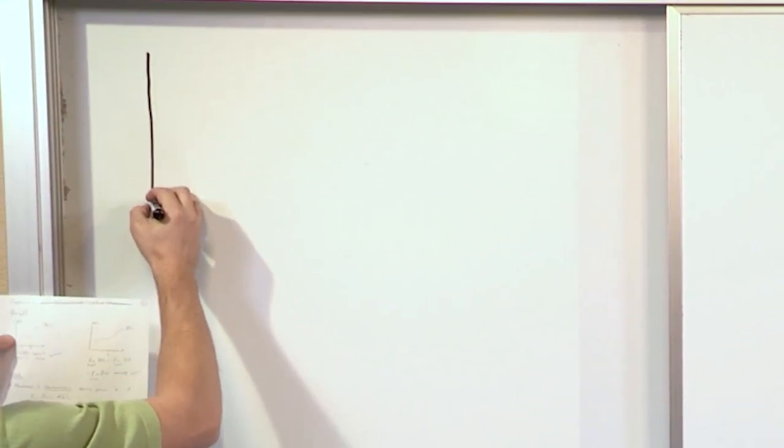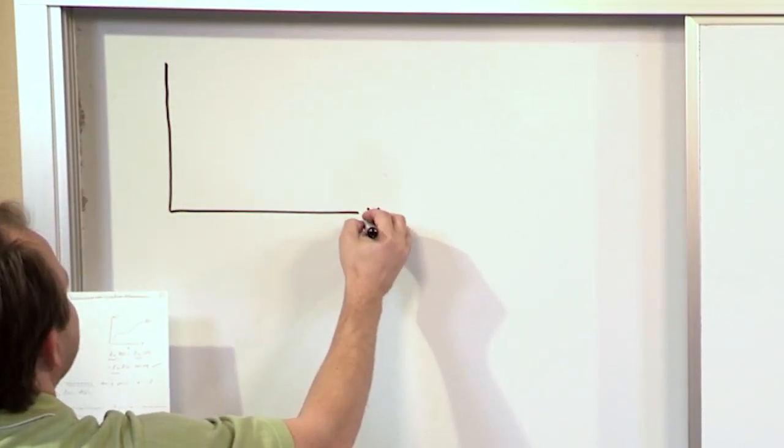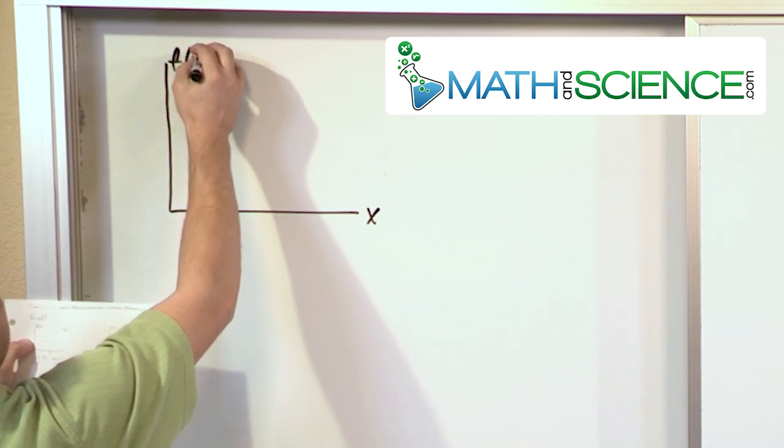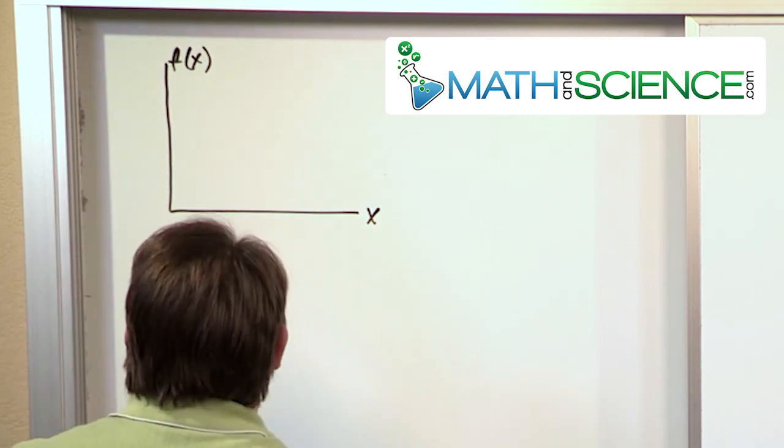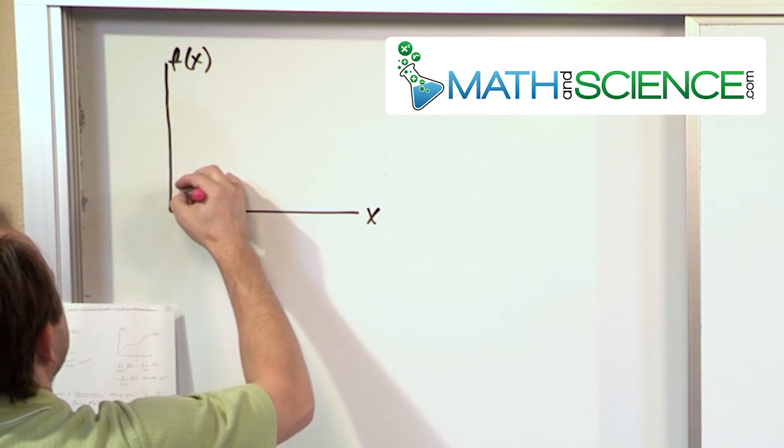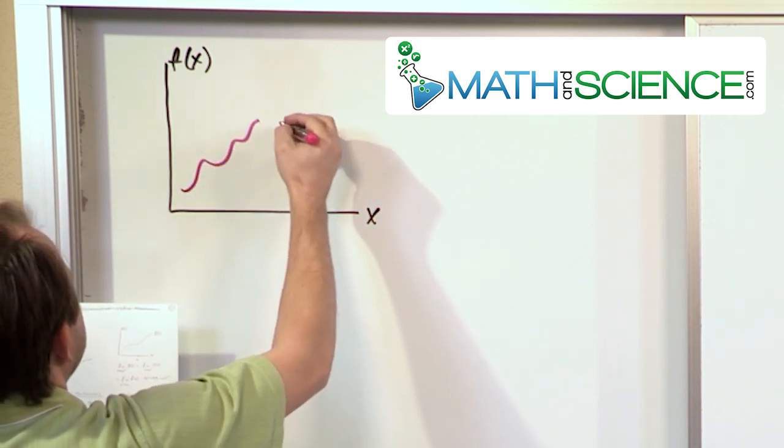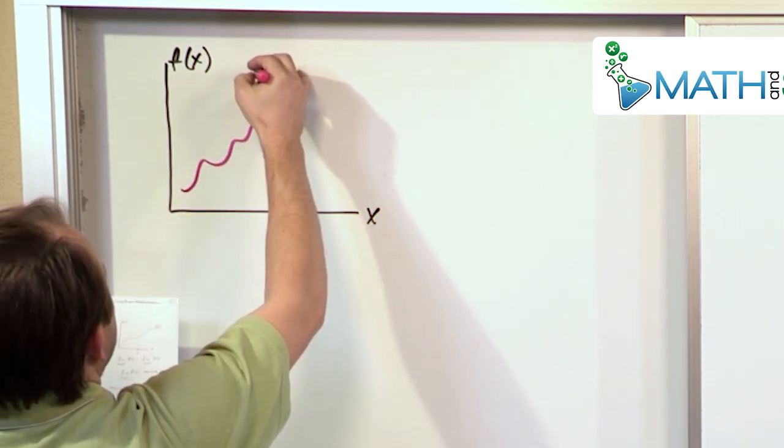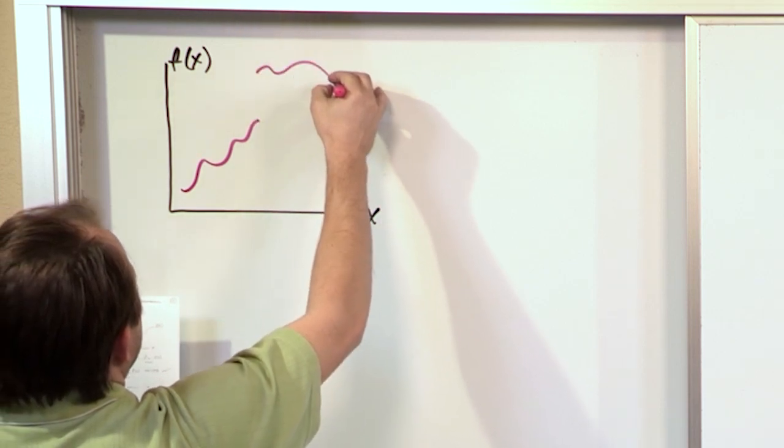So recall that we can have a couple of different situations when we plot functions. So here's f of x that we'll plot. We can have a situation where we have the function being very nicely behaved, and then suddenly at this point we have an instantaneous jump over here.